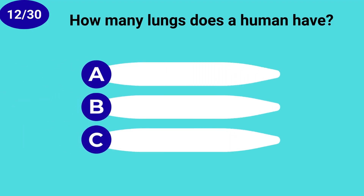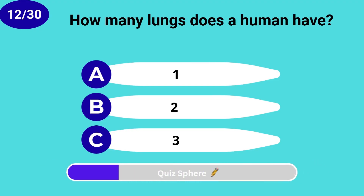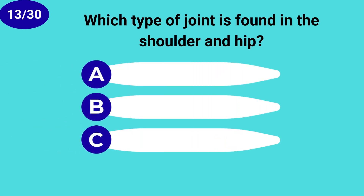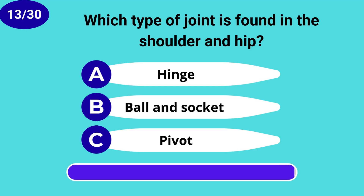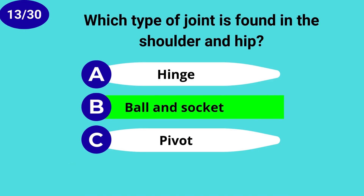How many lungs does a human have? Two. Which type of joint is found in the shoulder and hip? Ball and socket.